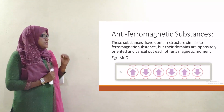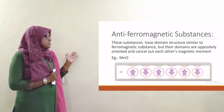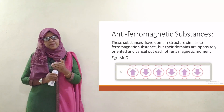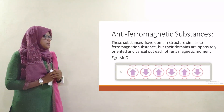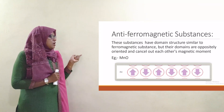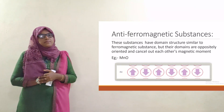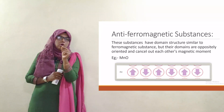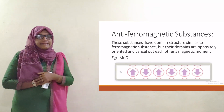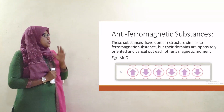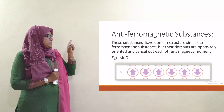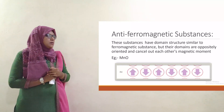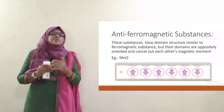The fourth category is anti-ferromagnetism. These substances have a domain structure similar to ferromagnetic substances, but the domains are oppositely oriented and cancel each other out.